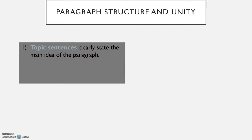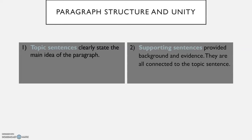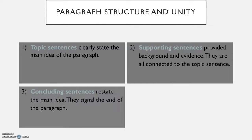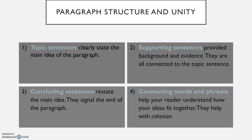Let's talk about paragraph structure and unity first. There are four main parts to think about. First are topic sentences, the focus of this video — they clearly state the main idea of the paragraph. Also, supporting sentences, which provide background and evidence and are all connected to the topic sentence. Third is the concluding sentence, which restates the main idea and signals the end of the paragraph. And fourth, connecting words and phrases help your readers understand how your ideas fit together — they help with cohesion, making all your ideas flow easily so your reader can understand.